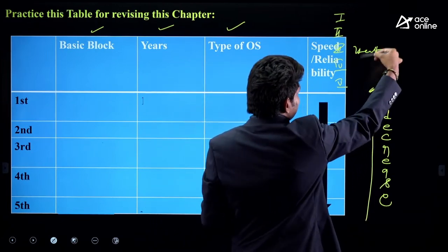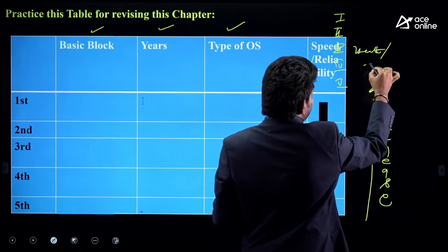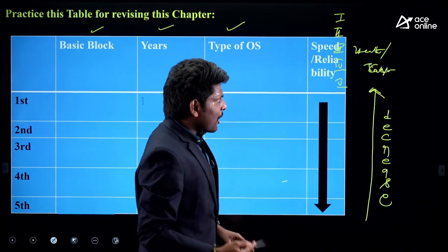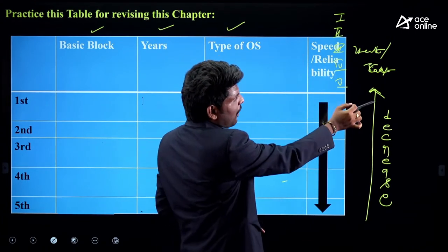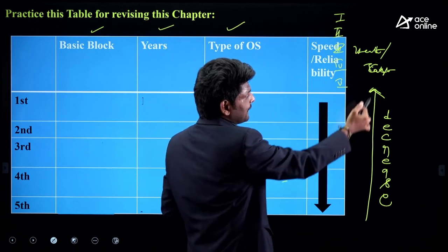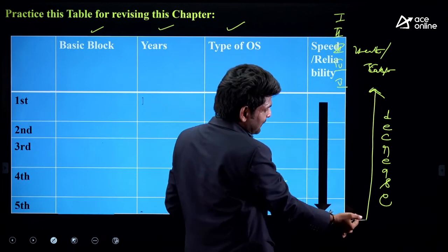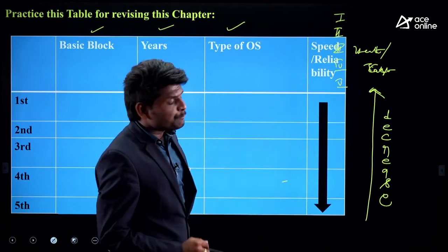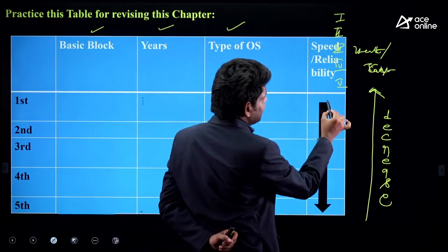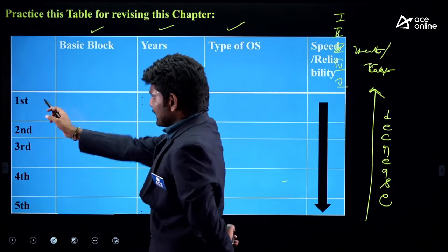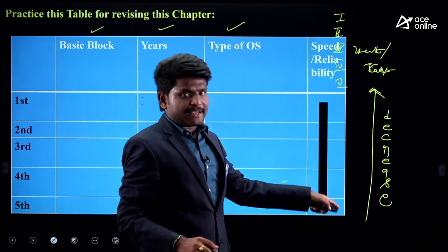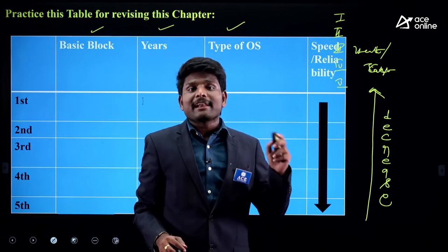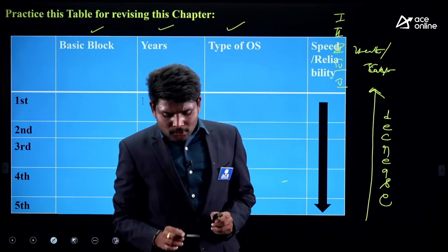If you talk about heat and cost, computers were more expensive and released more heat in earlier generations, but less in current generations. If you talk about positive things like speed and reliability, they were less in earlier generations but more in current generations. We try to enhance our computers. So let us start filling this table.